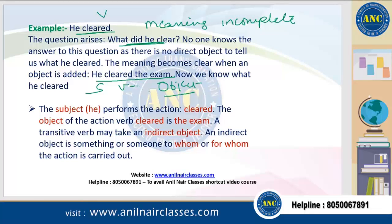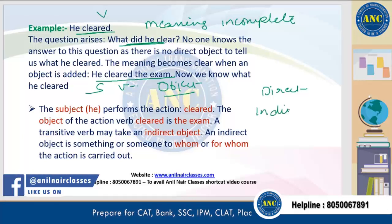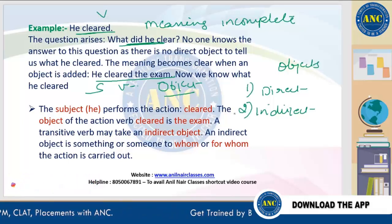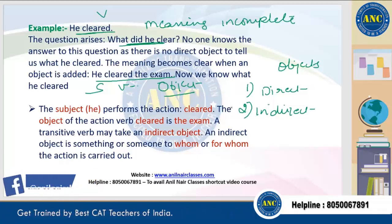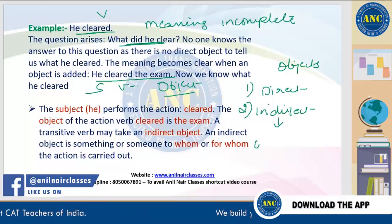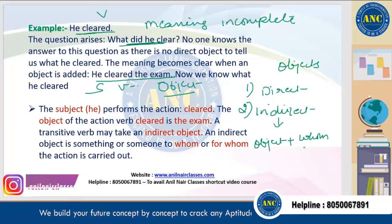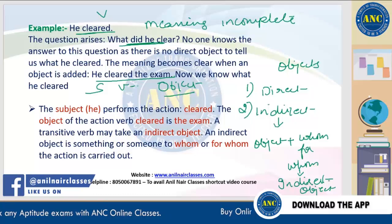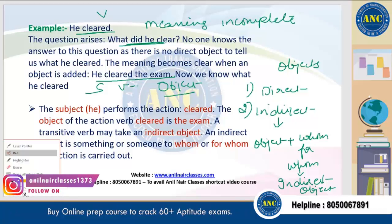A transitive verb may have two types of object: direct object and indirect object. To find the direct object, ask 'who' or 'what' after the verb. To find the indirect object, ask 'for whom' or 'to whom' after the direct object — you will get the indirect object.